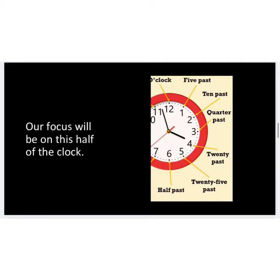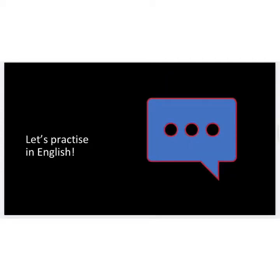So when the minute hand is pointing on the 1, it's 5 minutes after; on the 2, it's 10 minutes after; on the 3, that would be a quarter past or 15 minutes after; on the 4, that would be 20 past; on the 5, that means it is 25 minutes after the hour; and if it's pointing on the 6, that means it is half past the hour, or 30 minutes after the hour.